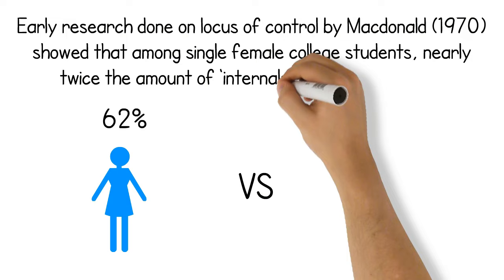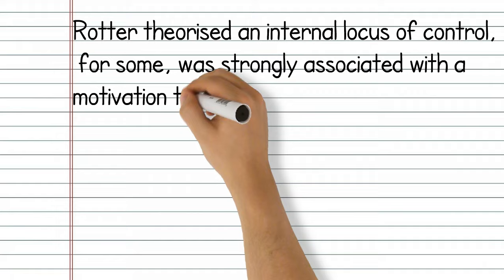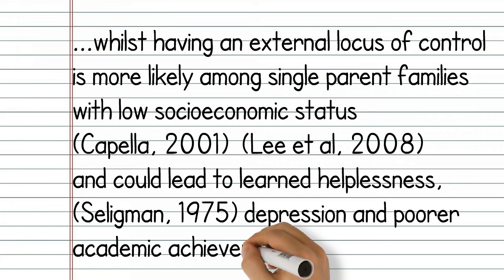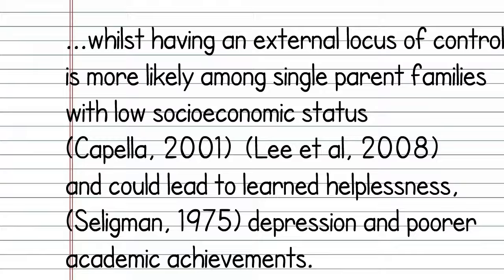Early research on locus of control by McDonald showed that among single female college students, nearly twice the percentage of internals reported practicing contraception than externals did. Rutter also theorised that having a strong internal locus of control was associated with a motivation to succeed, and those individuals had better health outcomes later on in life. Having a strong external locus of control is more likely among single parent families with low socio-economic status and could lead to learned helplessness, depression and poor academic achievements. The good news is research does support the idea that locus of control is learned and can be modified.